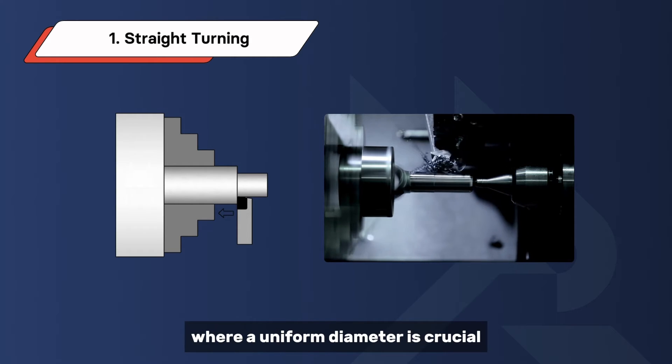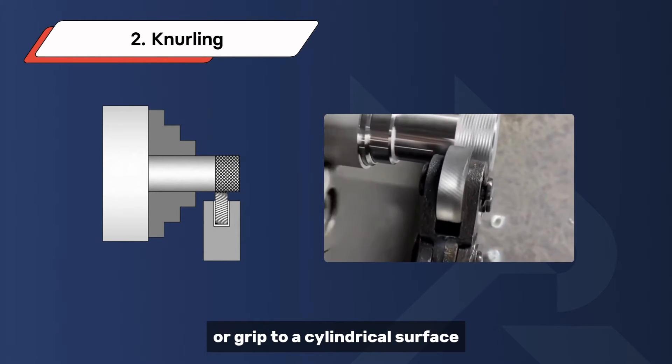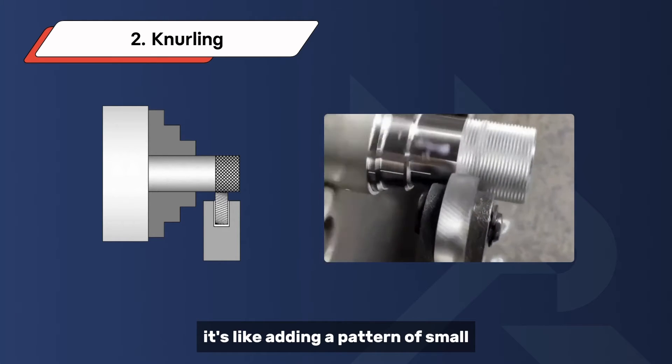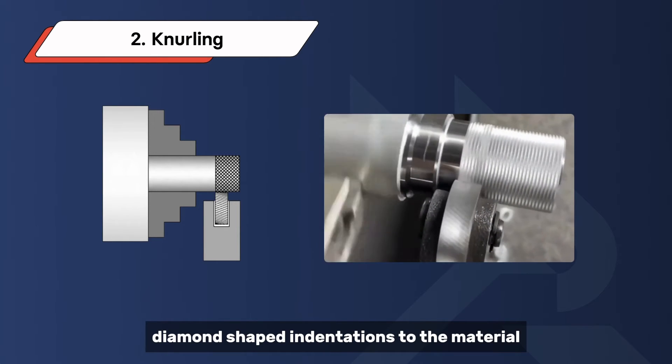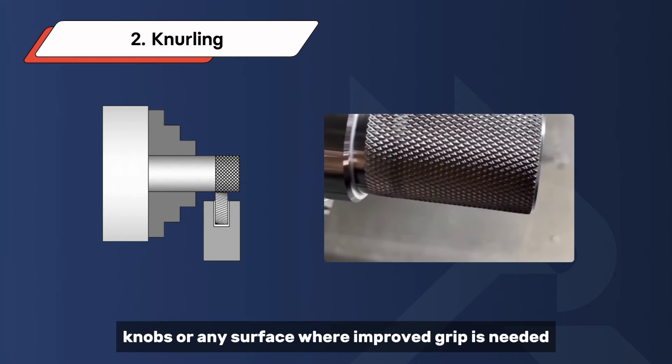Knurling is all about adding texture or grip to a cylindrical surface. It's like adding a pattern of small diamond-shaped indentations to the material.